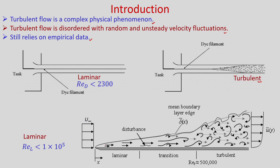Similarly, if you consider flow over a flat plate with free stream velocity, after a certain distance from the leading edge there will be velocity fluctuations starting near the wall, leading to turbulent flow. For flow over a flat plate, if the Reynolds number based on length is less than 5×10⁵ it will be laminar; otherwise it becomes turbulent. In both cases the Reynolds number defines the onset of turbulence.